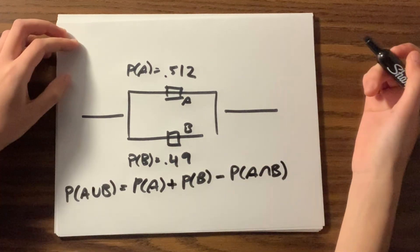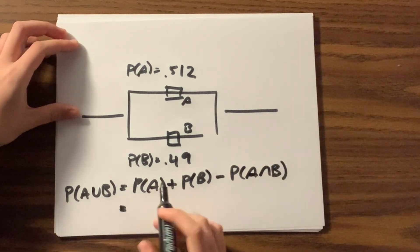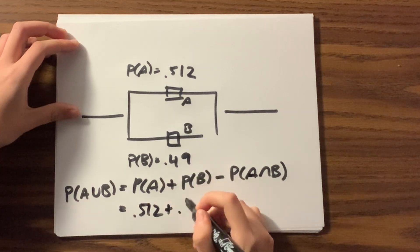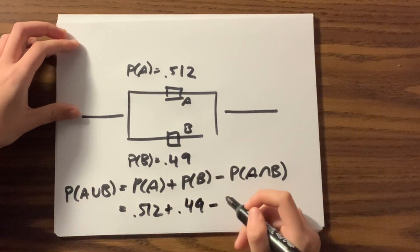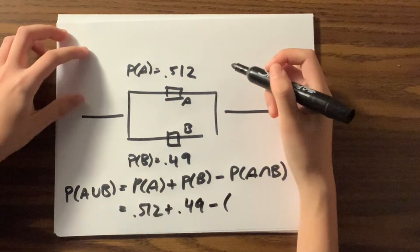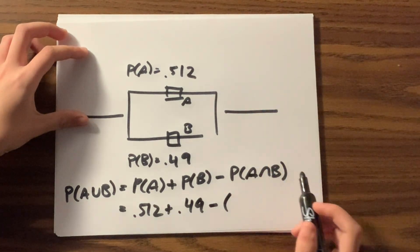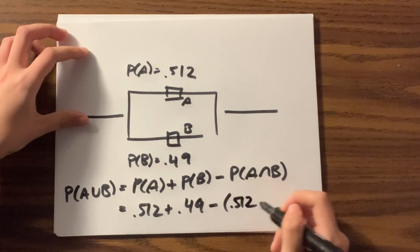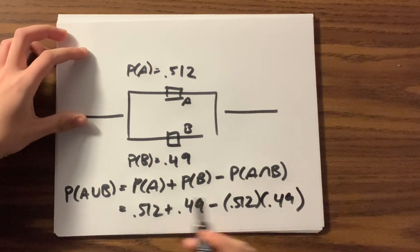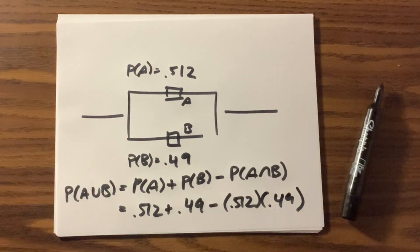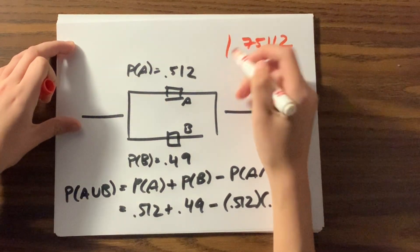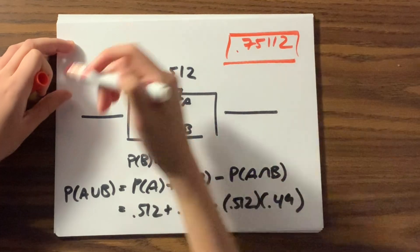This is equal to, let's see, probability of A is 0.512 plus 0.49 minus, and since these two are independent of each other, we can multiply them to get the probability of the intersection of A and B as 0.512 times 0.49. This will give you a solution of about 0.7512, and that's the probability of the entire circuit occurring.